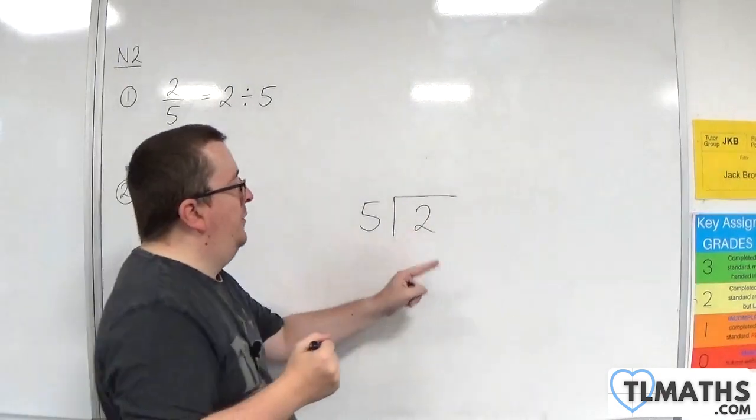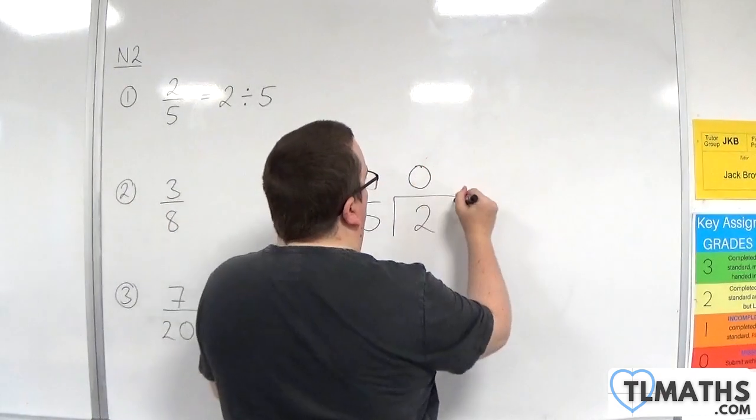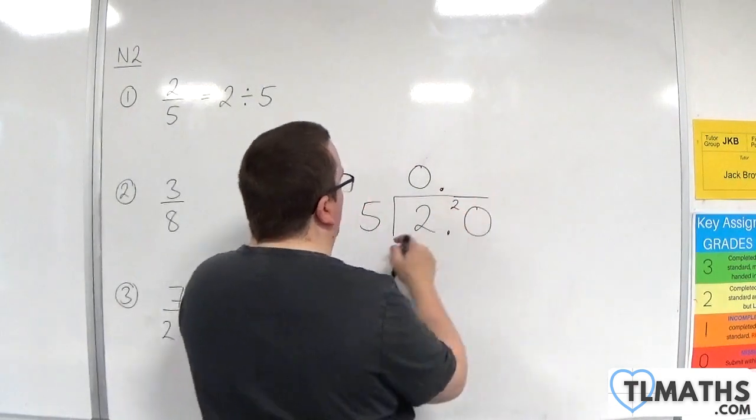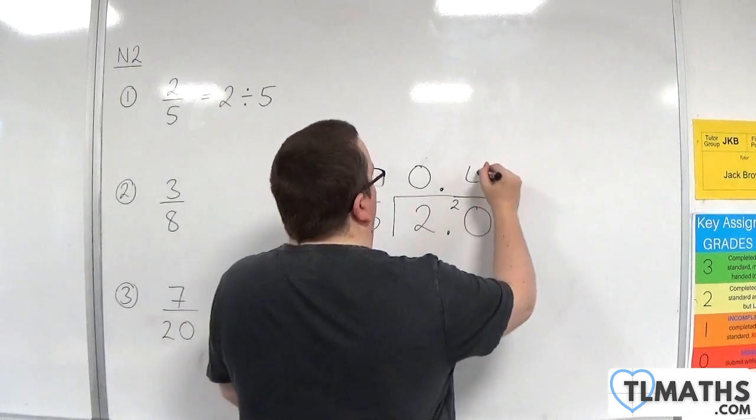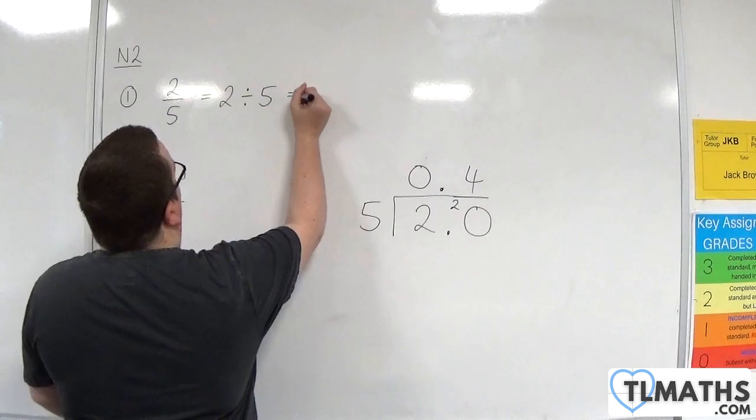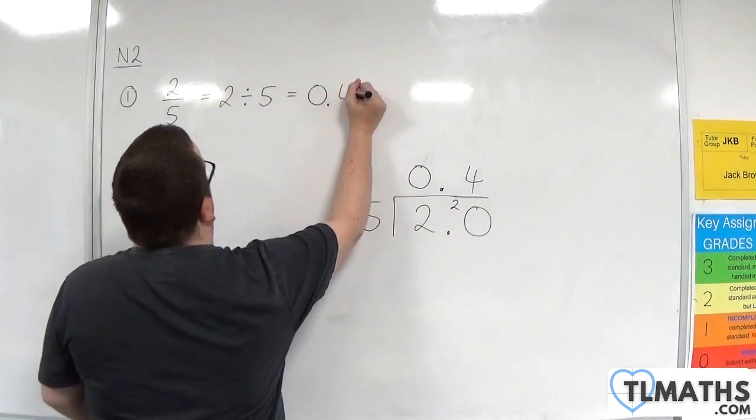Fives go into two zero times with two remainder. So I'm going to bring in a zero and a decimal point. Fives into 20 go four. So I now know that two-fifths must be equal to 0.4.